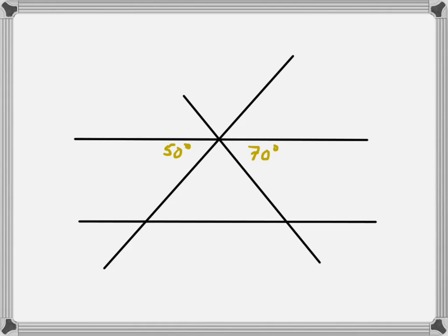So let's use the properties of parallel lines to find all the angle measures of the inside of this triangle. We want to find these three measures right there. That's what we're looking for.